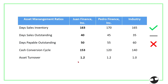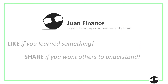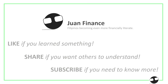For the Cash Conversion Cycle, we want the lowest figure possible. Our CCC of 153 days compares unfavorably to 120 for the alternative company and 140 for the industry. For Asset Turnover, a higher figure is better since it reflects sales generation from assets. Our 1.2 matches the alternative company and exceeds the industry at 1.0, making it a good criterion. That's all for this video — thank you for watching, and see you in Part 3.